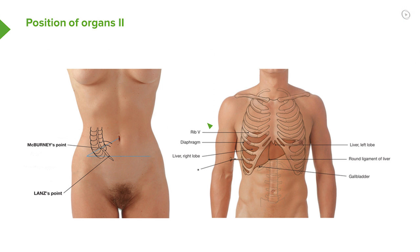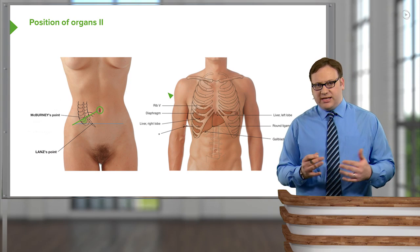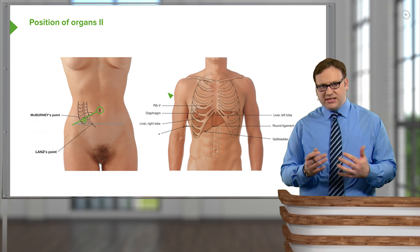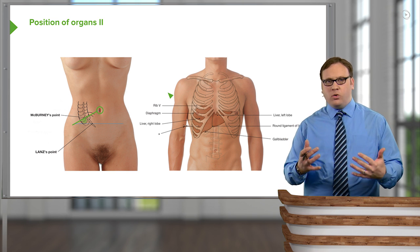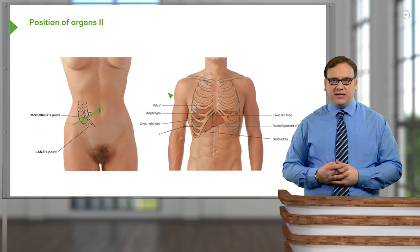We can remind ourselves of where the umbilicus is — we can see it here — and where the anterior superior iliac spine is. As we can see in the diagram, we draw a line between these two regions. A third of the way from the anterior superior iliac spine towards the umbilicus — about a third of the way across — we can locate our appendix. That's known as McBurney's Point. Palpation in this region can lead to quite severe acute pain and can indicate that the patient may have appendicitis. That's where these surface landmarks are really important in being able to identify which organs lie deep to the skin.